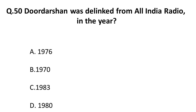Question 50, the last question: Doordarshan was delinked from All India Radio in the year — A) 1976, B) 1970, C) 1983, D) 1980. The correct answer is A: Doordarshan was delinked from All India Radio in the year 1976.